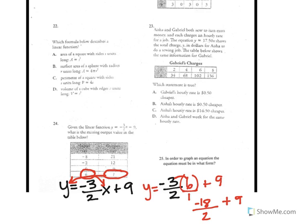Negative 18 divided by 2 gives us negative 9. Negative 9 plus 9 gives us 0. So our missing output value for this, which this is a question mark, y equals 0 when you plug in 6.